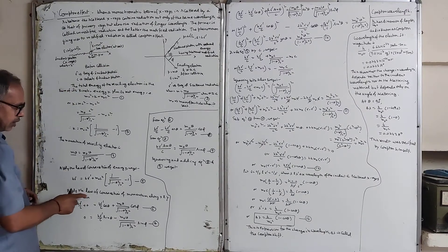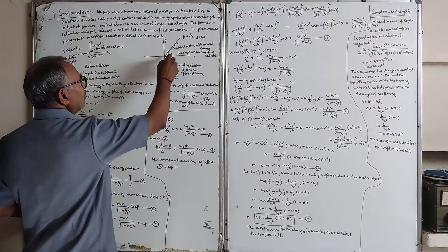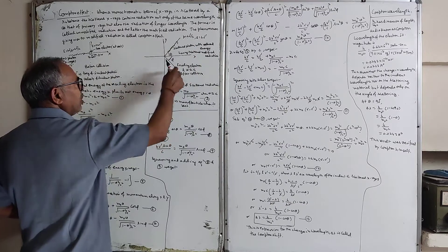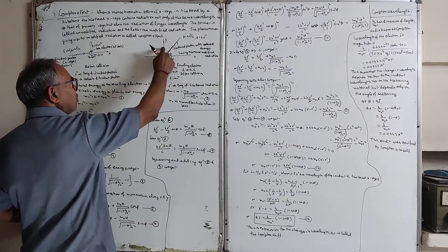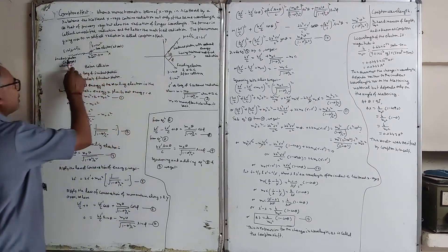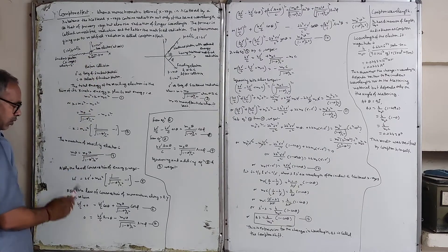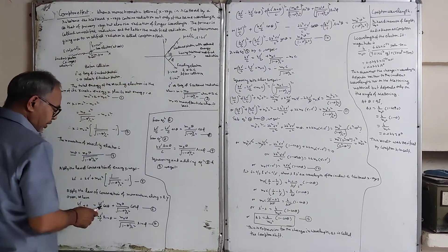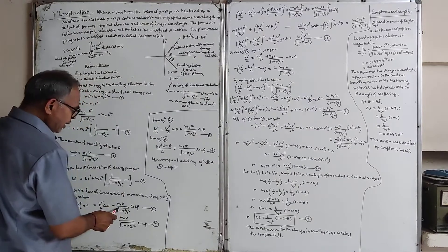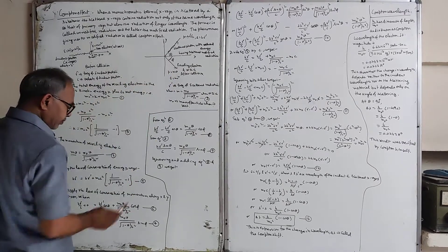Now we apply conservation of momentum along the x and y directions. The scattered photon contributes h-nu-dash/c · cos(theta) along the x-direction and h-nu-dash/c · sin(theta) along the y-direction. Along the x-axis: h-nu/c = h-nu-dash/c · cos(theta) + m₀v/√(1 − v²/c²) · cos(phi).